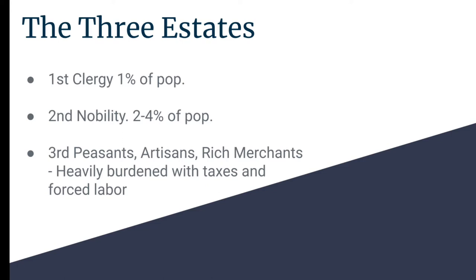The third and final estate consisted of a few rich merchants, artisans, peasants, and unskilled workers, but they bore most of the taxes. The first tax they had was called the taille, which was a land tax. The next tax was the tithe, which was a church tax. Additionally, they had an income tax, a poll tax, and a salt tax. They also had something called a corvée, which is an obligation to work for nobles several days during the year without pay. And they also owned about 40 percent of all the land.